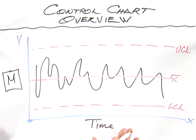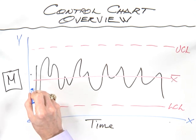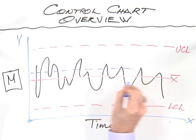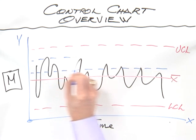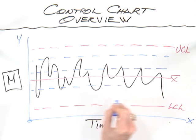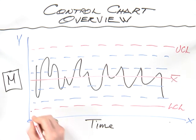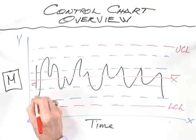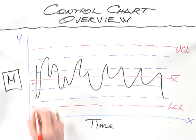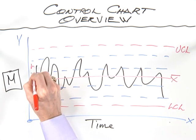Now the way we start interpreting the control chart is that we place zones on the chart. There are three sigma limits above the center line and three sigma limits below the center line. Most software will label these zones emanating from the center as C, B, A, same above: C, B, A.